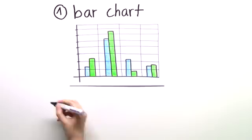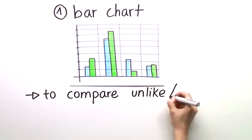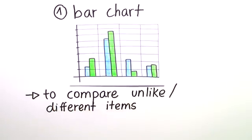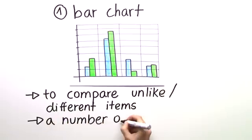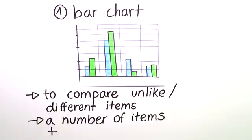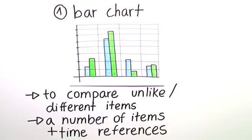This visual aid is used to compare unlike or different items. Typically you have a number of items, for example fruits, and you also have two or more time references, for example two different months or years.